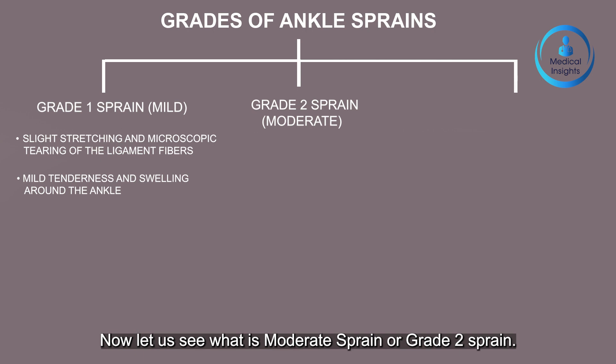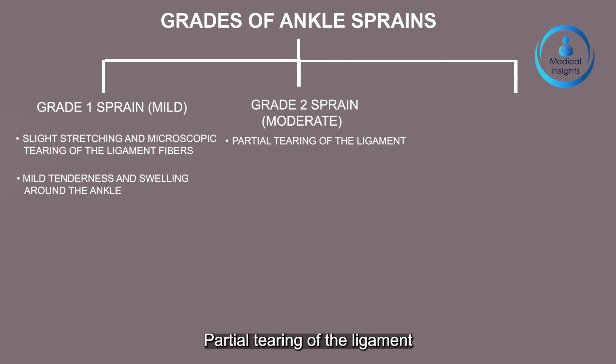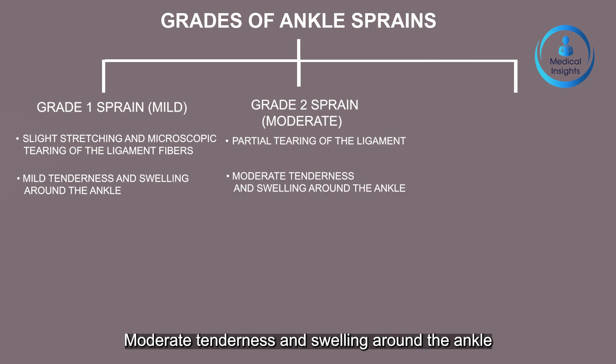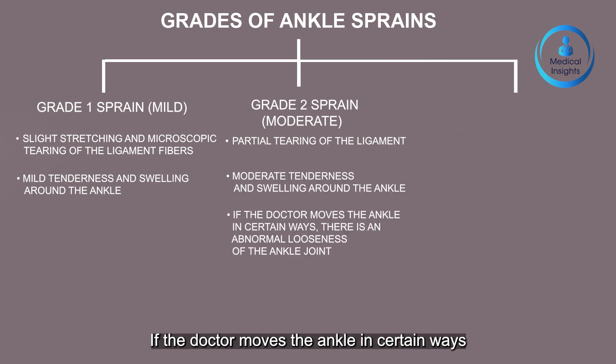Grade 2, moderate sprain: partial tearing of the ligament, moderate tenderness and swelling around the ankle. If the doctor moves the ankle in certain ways, there is an abnormal looseness of the ankle joint.